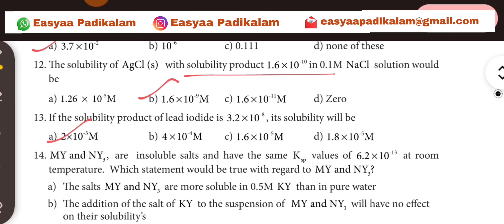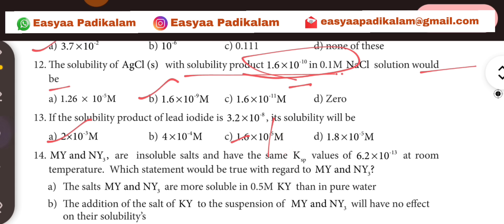Solubility of AgCl with solubility product. The solubility product is 1.6 into 10 power minus 10. With 0.1, it becomes 0.1 minus 10, then 0.1 minus 9. So the answer is 10 power minus 9. 1.6 into 10 power minus 10 gives 10 power minus 9.